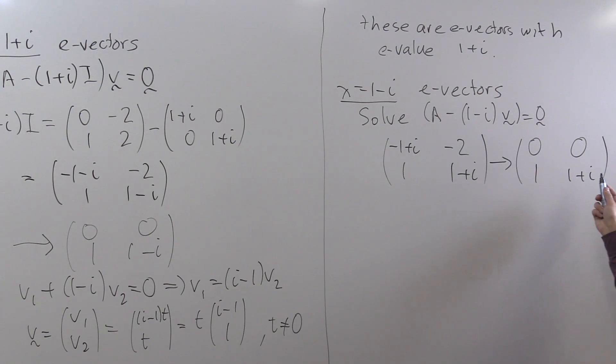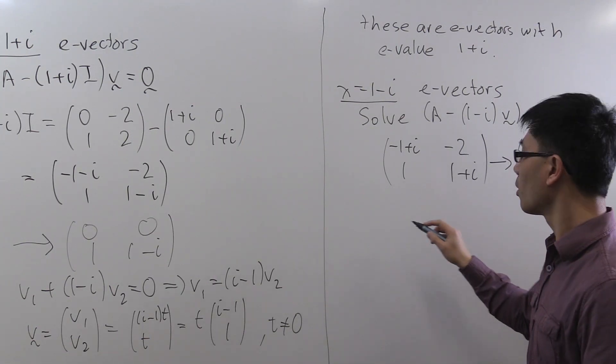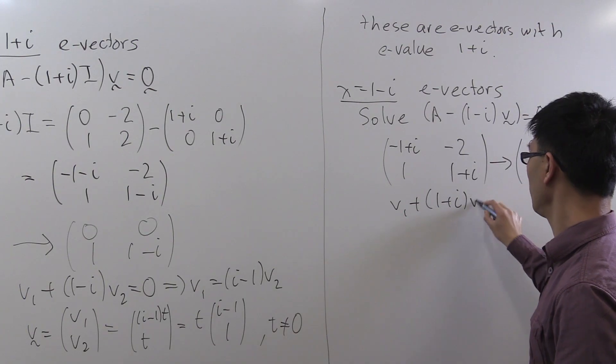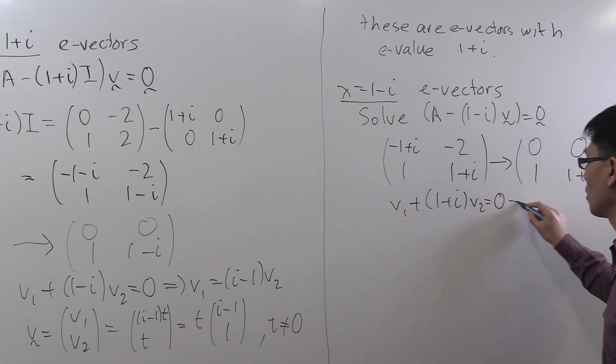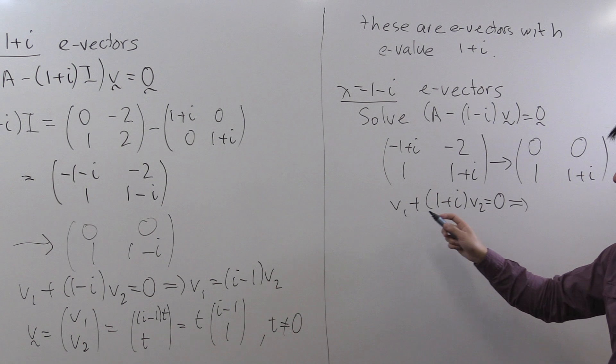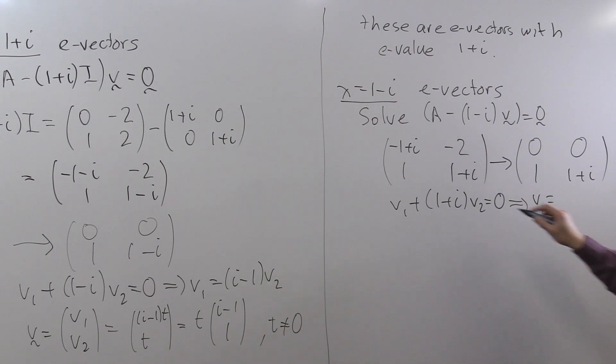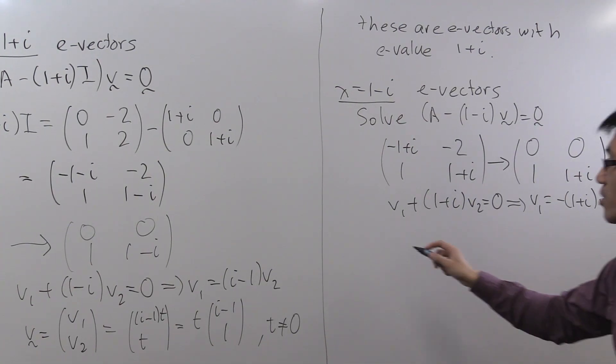And this allows you to solve by back substitution as usual. So here, v1 plus 1 plus i times v2 equals 0, which means that you can rewrite the first coordinate, v1, in terms of v2, as v1 equals negative 1 plus i times v2. Now, we can just write down the solution.